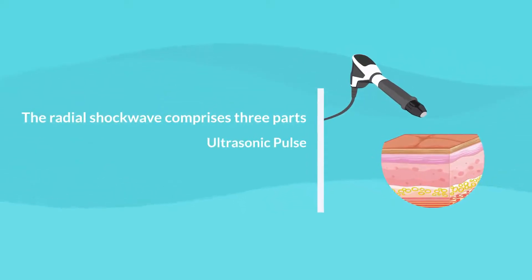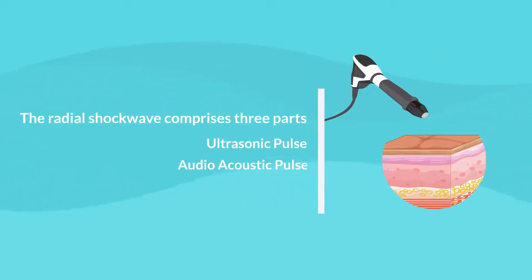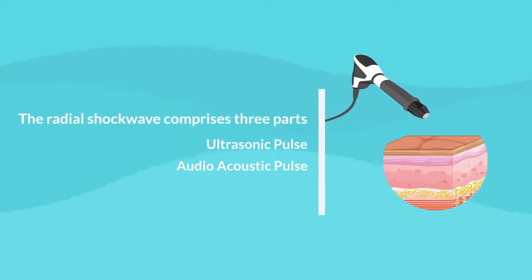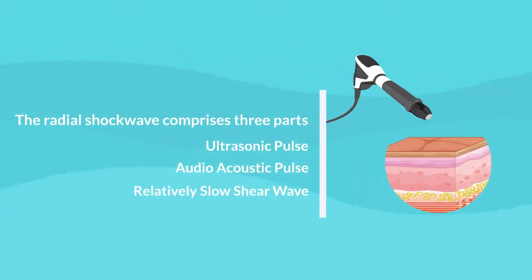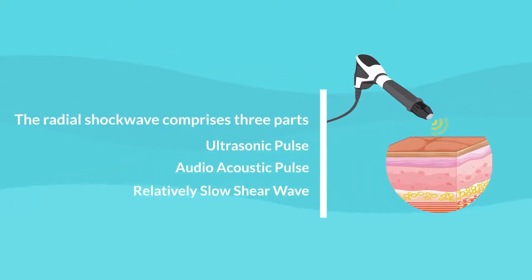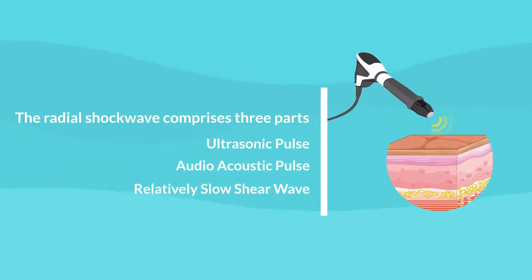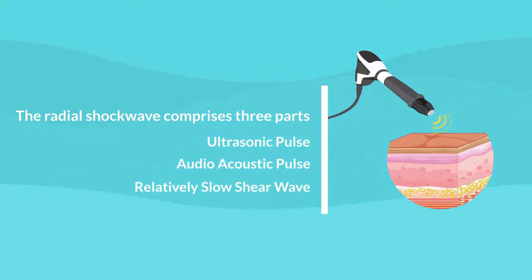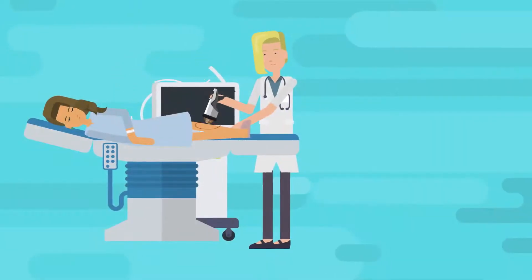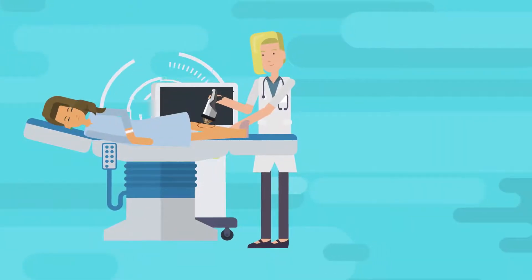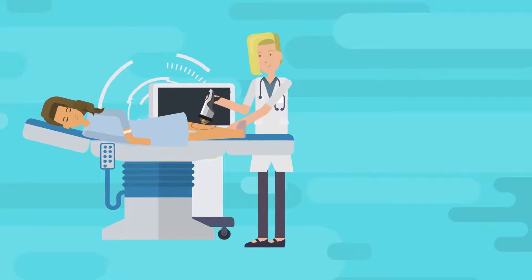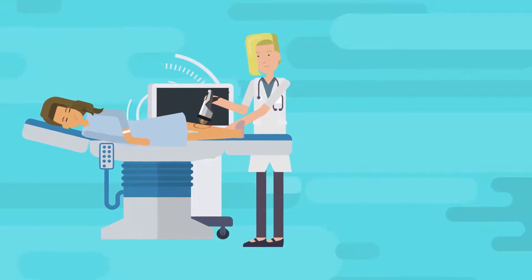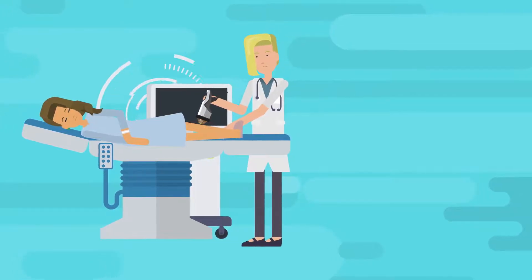Here's how they both work. The radial shockwave comprises three parts: the ultrasonic pulse, audio acoustic pulse, and the relatively slow shear wave. The pressure waves lose power the deeper they enter the body. Focused shockwaves, however, can penetrate deeper into the tissues and deliver all of their power at the designated depth.